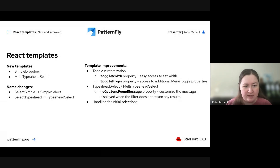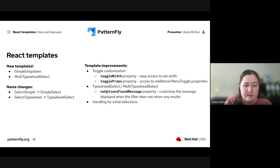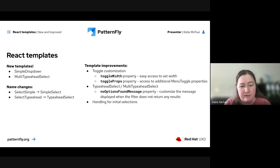Coming in 5.4 are updates to templates: two new templates are officially arriving — simple dropdown and multi-type-ahead select — giving more options for migration efforts. We've also renamed two templates from 'select simple' to 'simple select' and 'select type-ahead' to 'type-ahead select' for consistency. For other template improvements, there's a new toggle width property to easily set the width of your toggle, and a new toggle props property that spreads onto the toggle, giving access to any menu toggle properties for further customization.